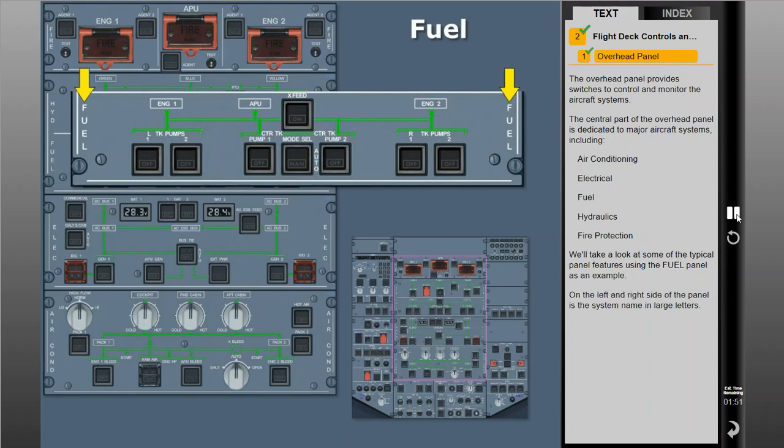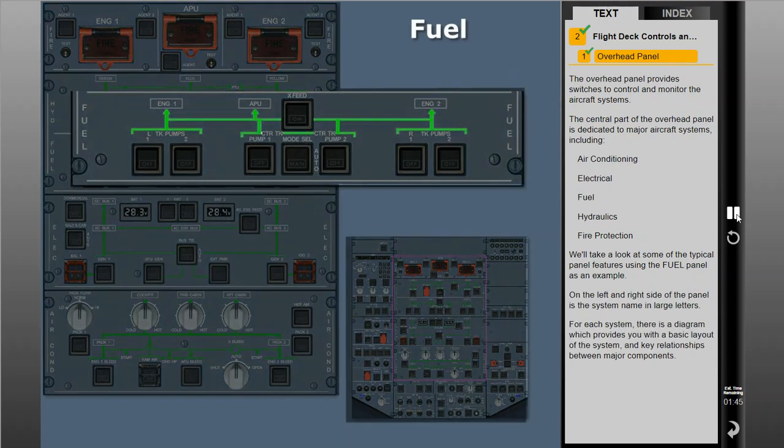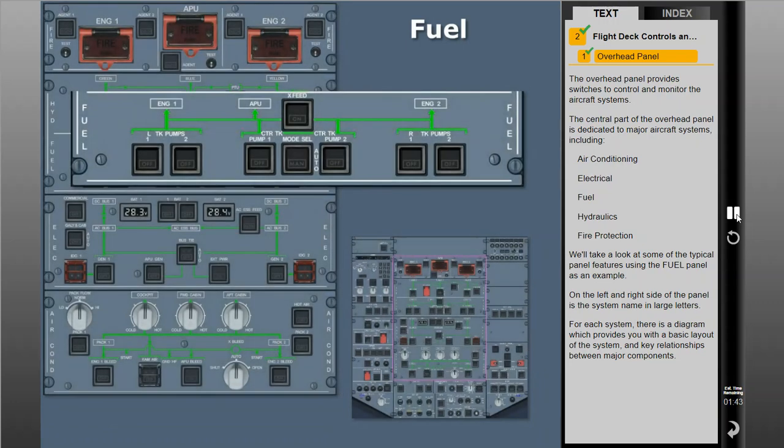On the left and right side of the panel is the system name in large letters. For each system, there is a diagram which provides the basic layout of the system and key relationships between major components.